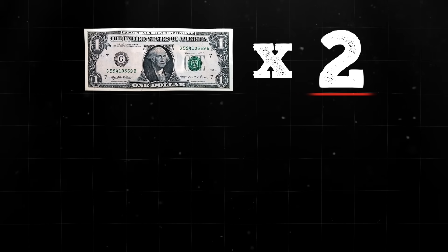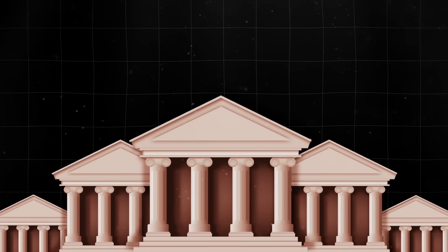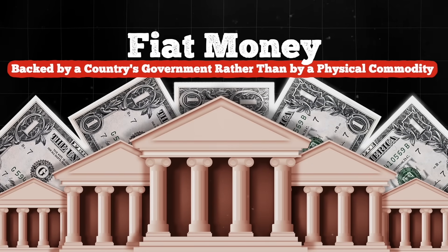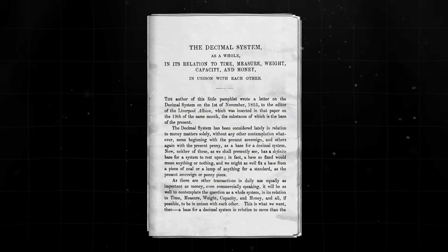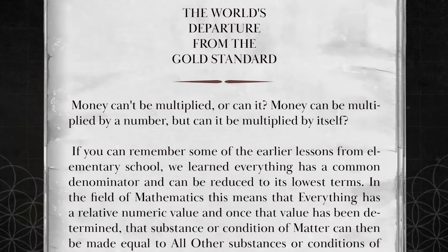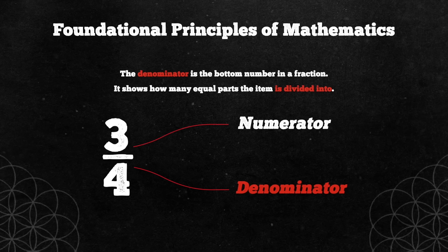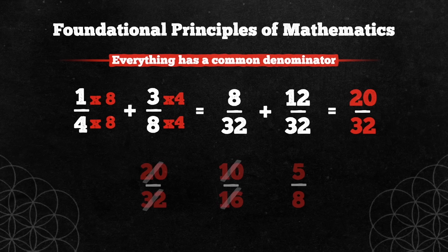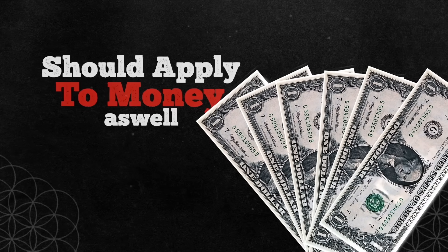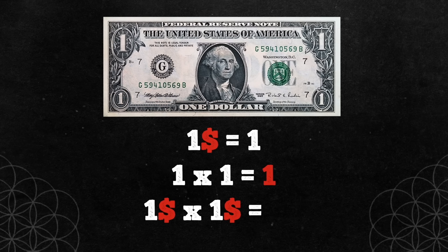Money can't be multiplied, or can it? Money can be multiplied by a number, but can it be multiplied by itself? Terrence Howard critically examines the transition from a gold-based monetary system to a fiat system, exploring its implications on the nature of money and its multiplication. His analysis touches on both the mathematical and conceptual aspects of currency. Terrence starts by posing an intriguing question. He then delves into the foundational principles of mathematics, reminding us that everything has a common denominator and can be reduced to its lowest terms. This approach should apply to money as well, arguing that if the monetary value can be made equal to the number it's being multiplied by, then theoretically, money can be multiplied.